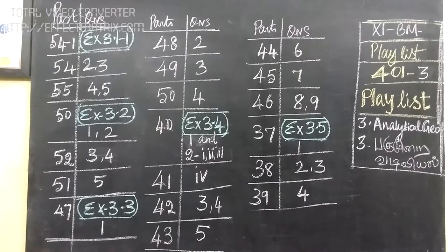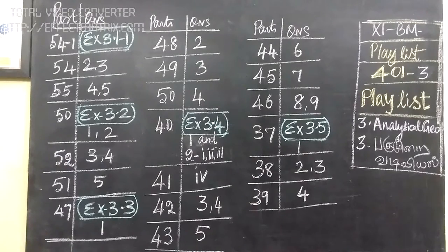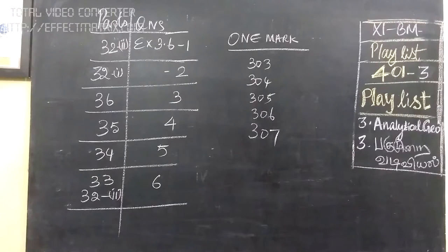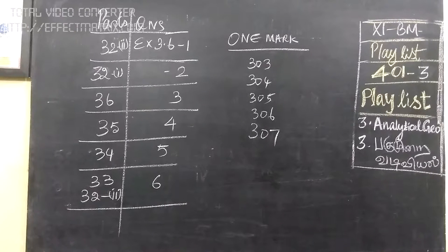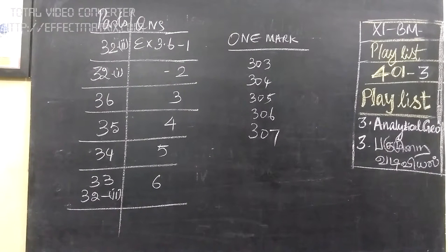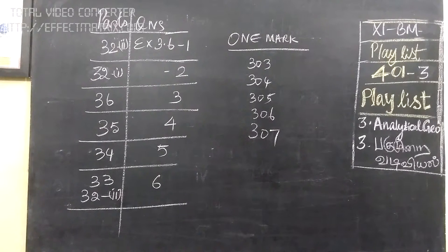Now we see Exercise 3.6 questions 1, 2, 3, 4, 5, and 6. So Exercise is over. Then for 1-mark questions, part numbers 3, 0, 3, 4, 5, 6, 7 — it is in this one-day playlist.